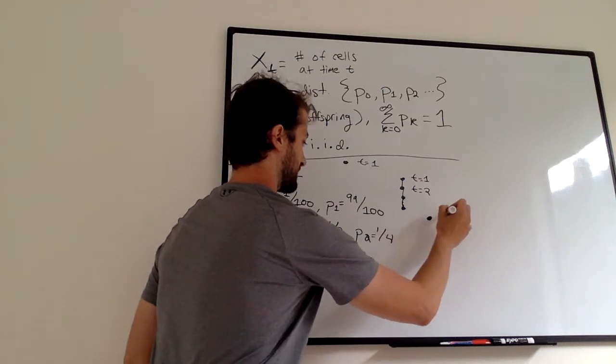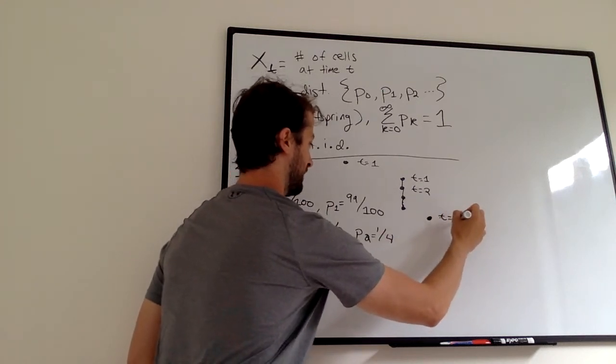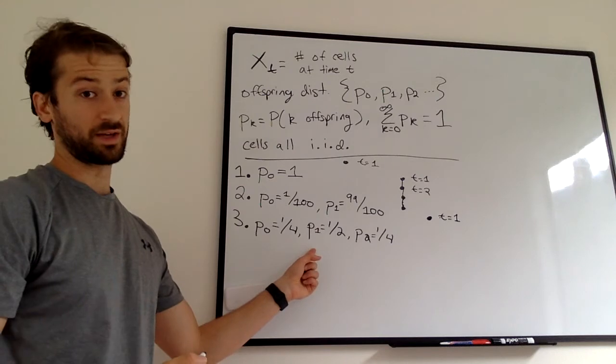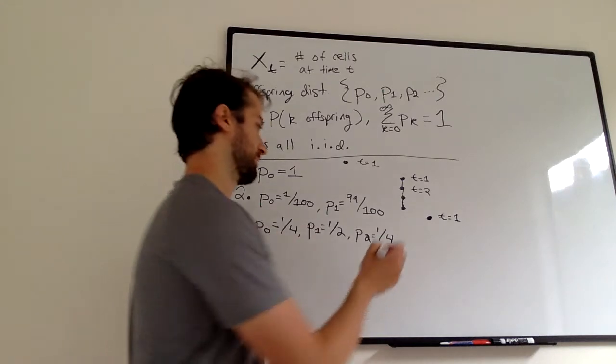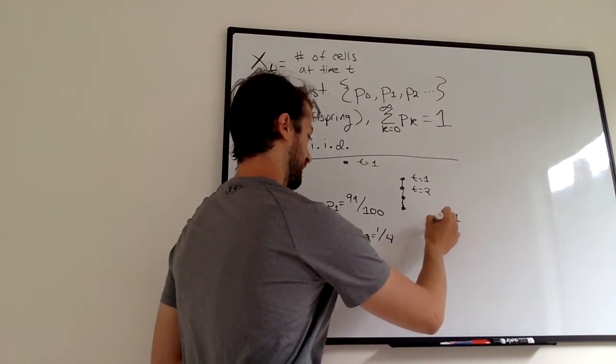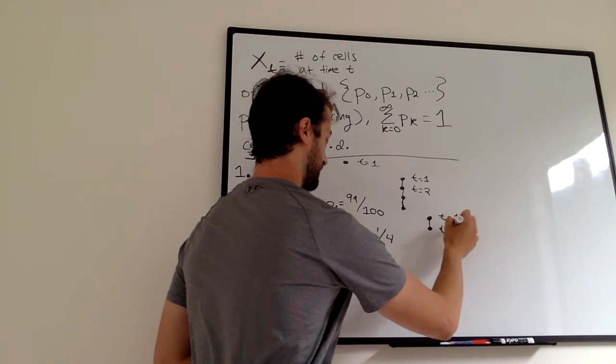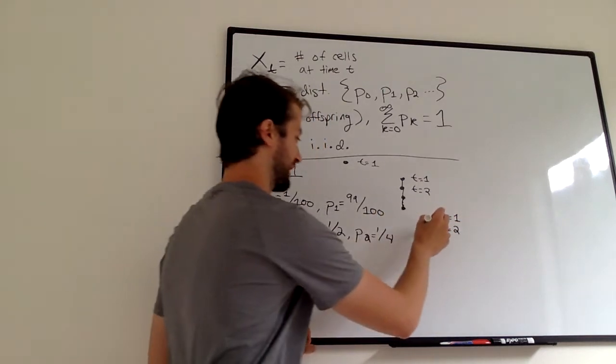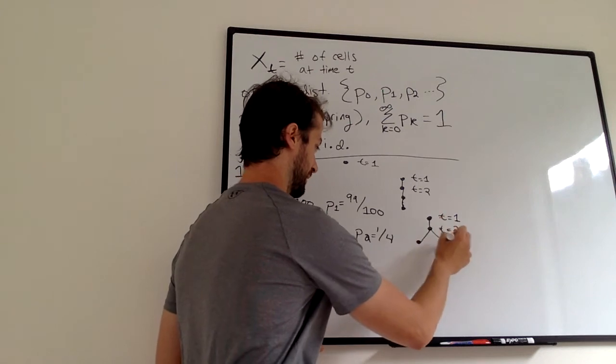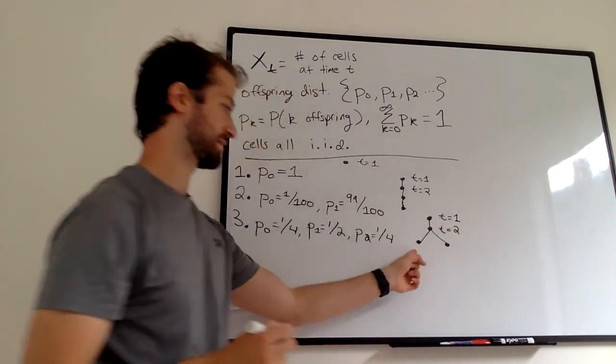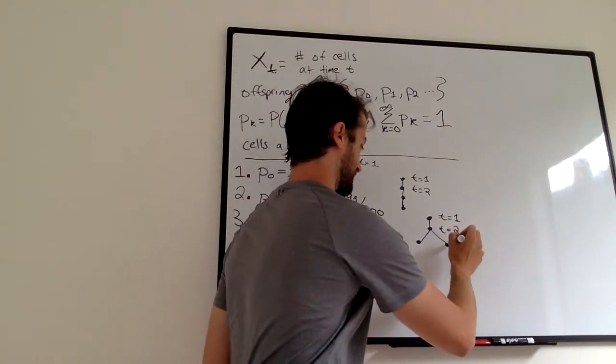So in this case, say we start at time T equals 1. Say the first cell only has one kid. That's the highest probability, 1/2. And then say at time T equals 2, it has two kids, so our first branch. Now we're in the third generation, and this is our first example.